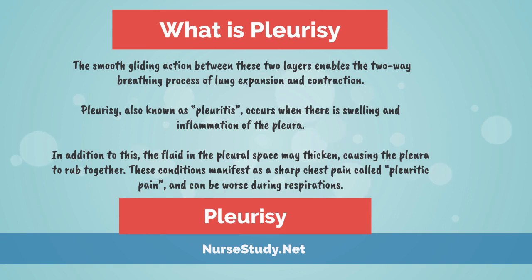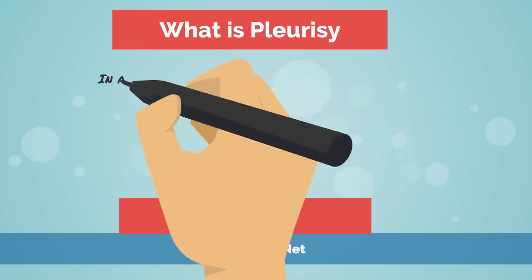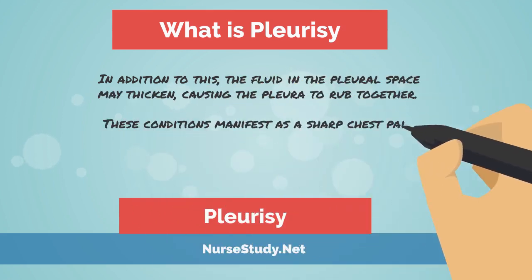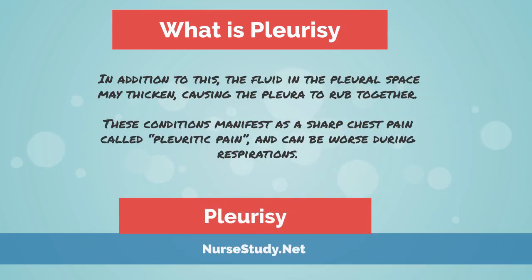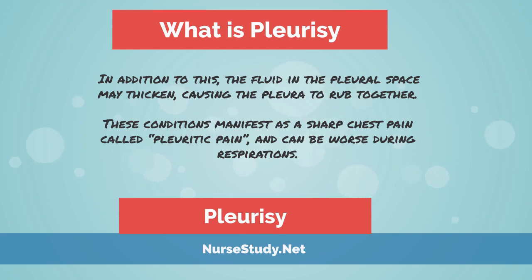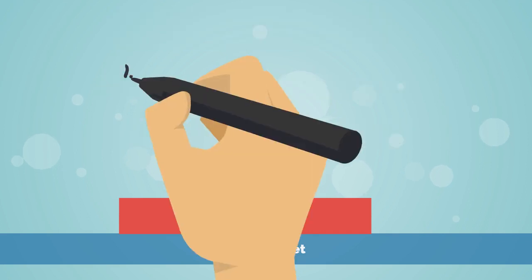Pleurisy, also known as pleuritis, occurs when there is swelling and inflammation of the pleura. In addition to this, the fluid in the pleural space may thicken, causing the pleura to rub together. These conditions manifest as a sharp chest pain called pleuritic pain, and can be worse during respirations.